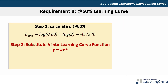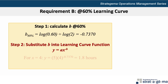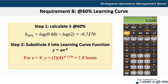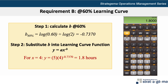To determine the installation time for the fourth installation using the calculator, enter 5 times, open parenthesis, 4, yx, recall 2, close parenthesis, and after pressing the equal sign, you should get 1.8 hours. You could also enter negative 0.7370 instead of recalling the stored value, and you'll end up with a very close but rounded value.